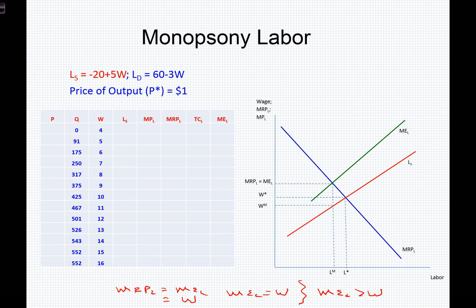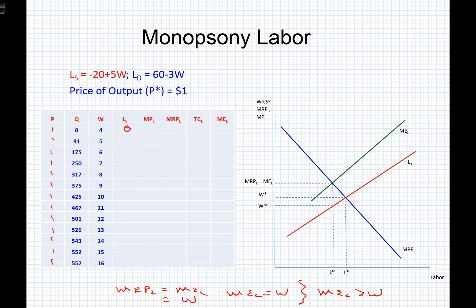If we have a competitive goods market with price of output P-star equal to one, then P-star equals one regardless of quantity produced — that's our market-clearing level. We fill out the price column with P equals one throughout. When the wage is four, plugging into the labor supply equation — negative 20 plus 5 times 4 — gives zero. With zero labor units, we have no marginal product of labor, no marginal revenue product, zero total cost of labor, and no marginal expense of labor.